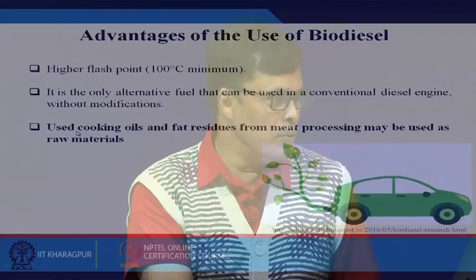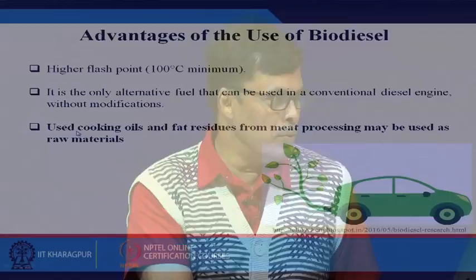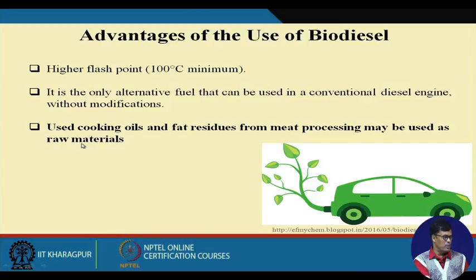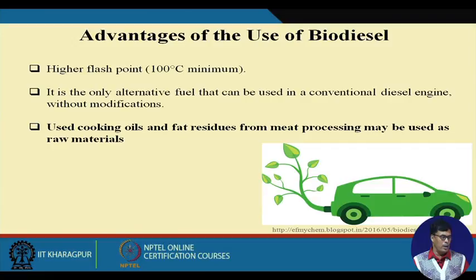In the case of biodiesel, you do not have to do any kind of modification of the engine. Use of cooking oil and fat residue from meat processing may be used as raw material. Sometimes we have seen different shops where fried material is prepared — they use a lot of cooking oil, and after some time this cooking oil is not of edible quality. So this oil can be used for the generation of biodiesel.